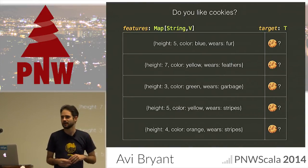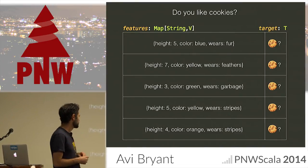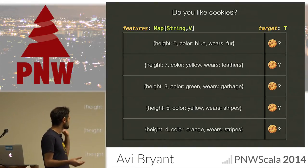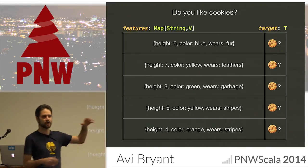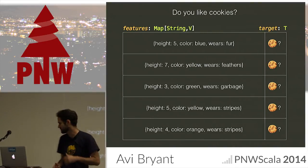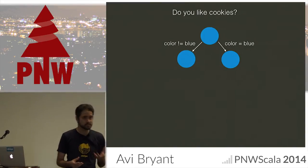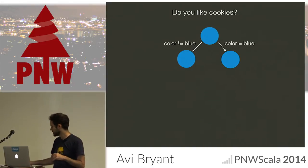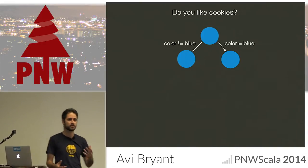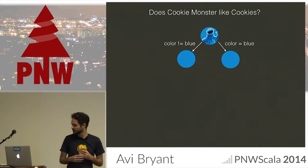So let's make this more concrete. Let's say we're trying to predict: do you like cookies? You might have a number of observations — sets of features. Here is something which is blue and furry and about yay high — does it like cookies? And so on. You want a prediction back. So you might have a very simple tree like this, initially, to answer this question. This is primarily a talk about learning and building these trees, but first let's talk about how you evaluate observations using the trees.